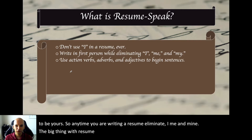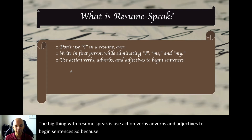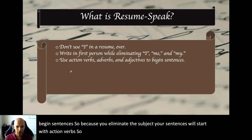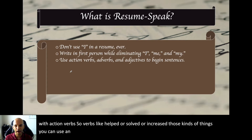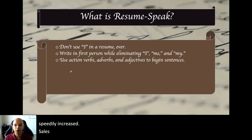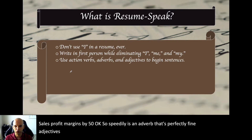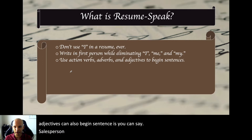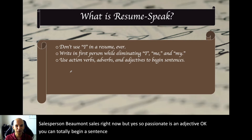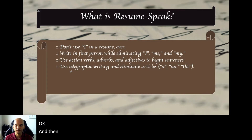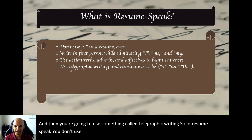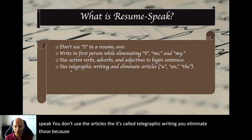The big thing with resume speak is you use action verbs, adverbs, and adjectives to begin sentences. Because you eliminate the subject, your sentences will start with action verbs — like helped, solved, increased. You can use an adverb to say how a verb was done: 'Speedily increased sales profit margins by 50%.' Adjectives can also begin sentences: 'Passionate salesperson...' What you don't start a sentence with is 'I.' Also, in resume speak, you don't use the articles 'a' and 'the' — it's called telegraphic writing. You eliminate those to reduce wordiness and make it quick to speed read.